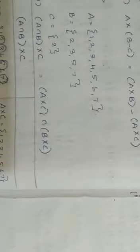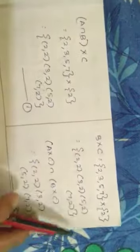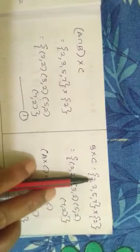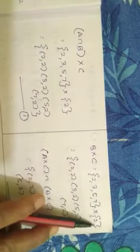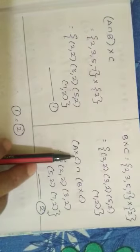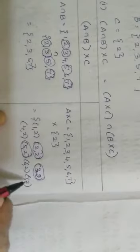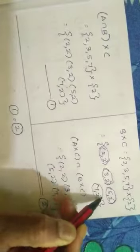Next we find B×C. The value of B is {2,3,5,7} cross C which is {2}. So B×C = (2,2), (3,2), (5,2), (7,2). Now we write the whole term (A×C) ∩ (B×C). The relationship between A×C and B×C is intersection, so we find the common elements. The common ordered pairs in both sets are (2,2), (3,2), (5,2), (7,2). Let this be equation number 2.